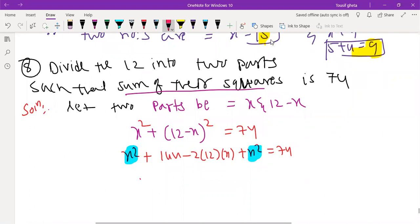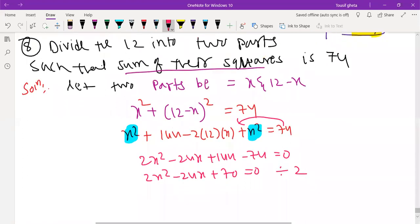You will get 2x square minus 24x plus 144 minus 74. 2x square minus 24x plus 70 equals to 0 divided by 2 you do. You will get x square minus 12x plus 35 equals to 0. Minus 35 factorization will get you 7, 5.